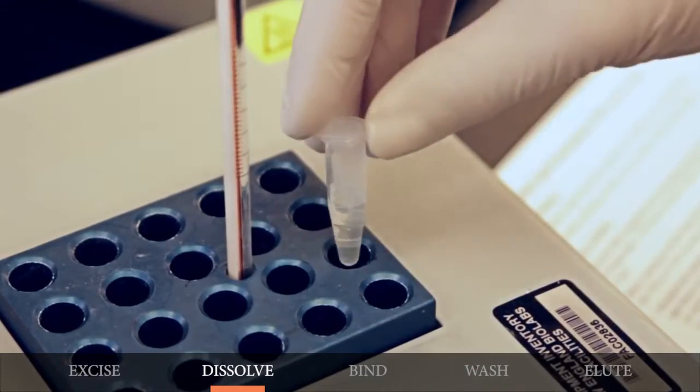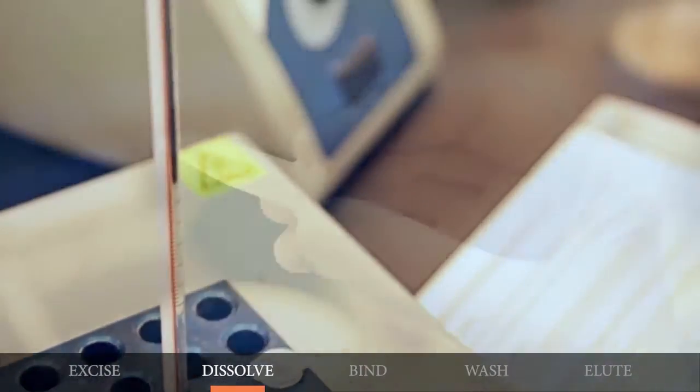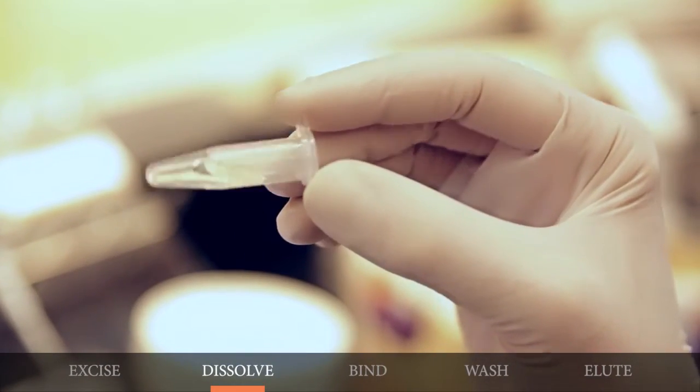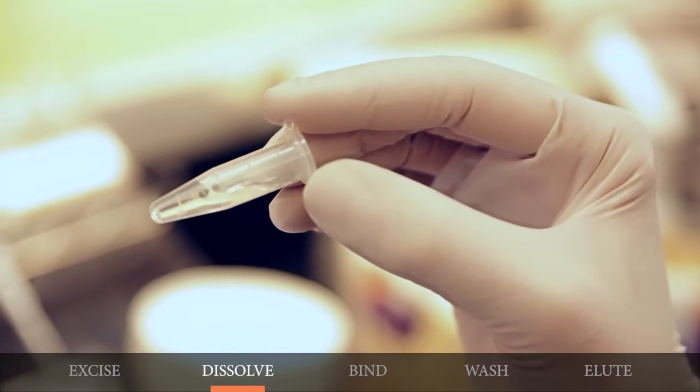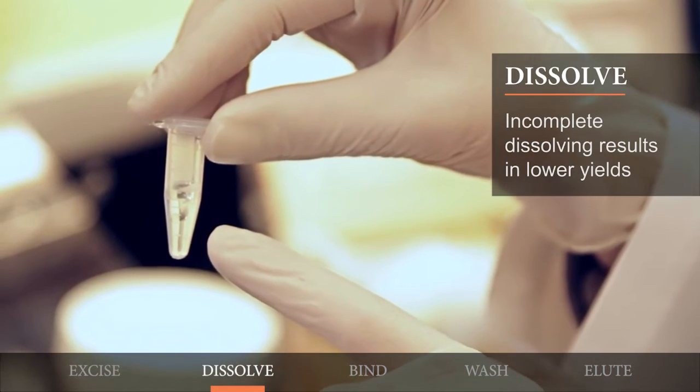Incubate the sample between 37 to 55 degrees for 5 to 10 minutes to melt the agarose, mixing periodically to ensure that the agarose completely dissolves. Incomplete dissolving will result in lower yields.